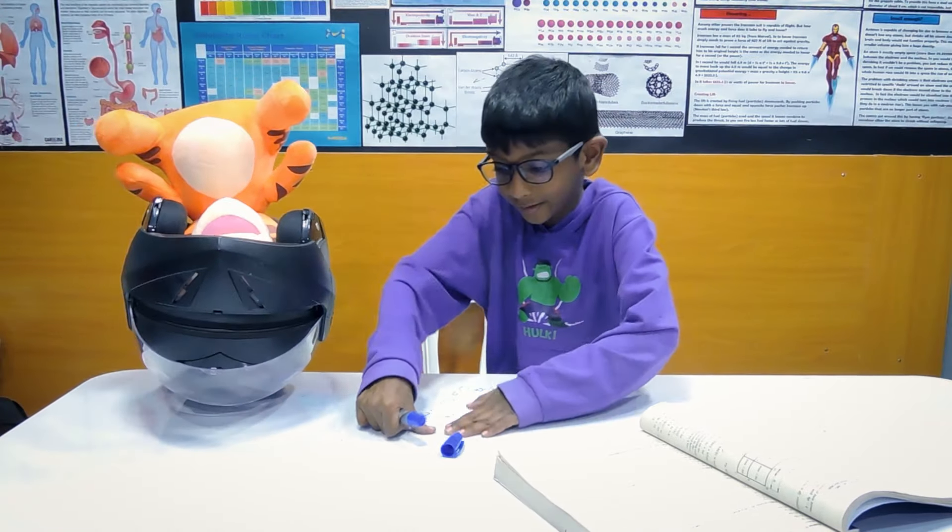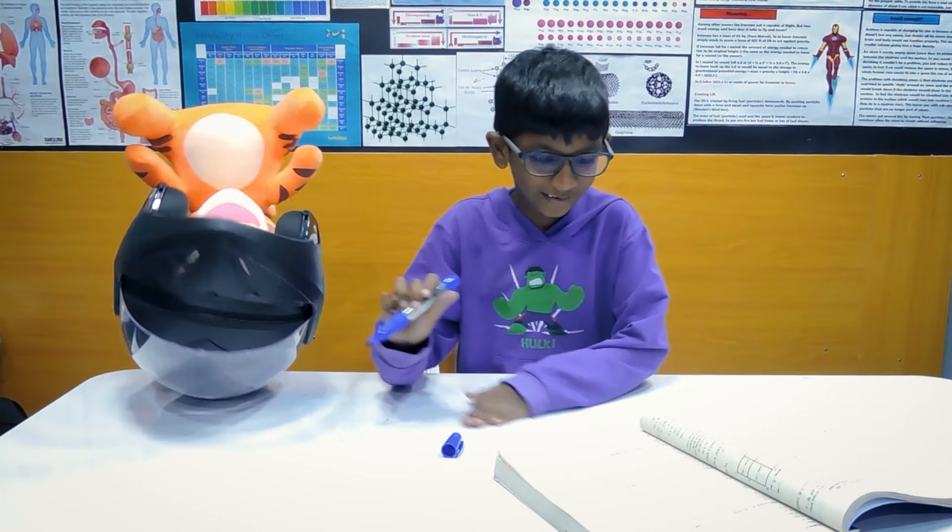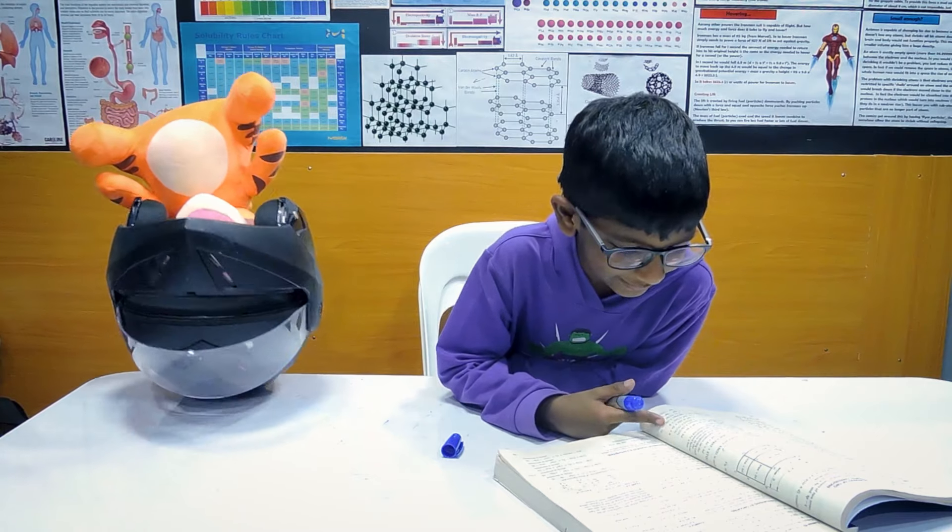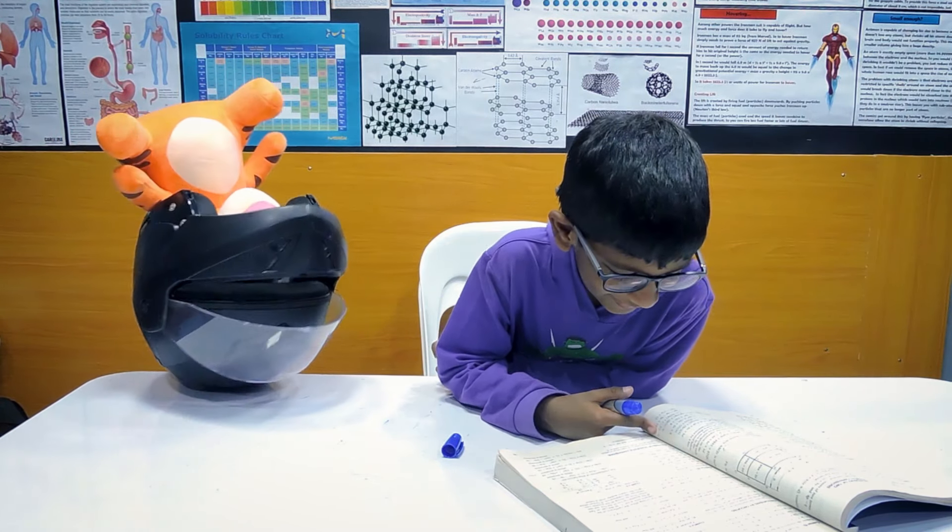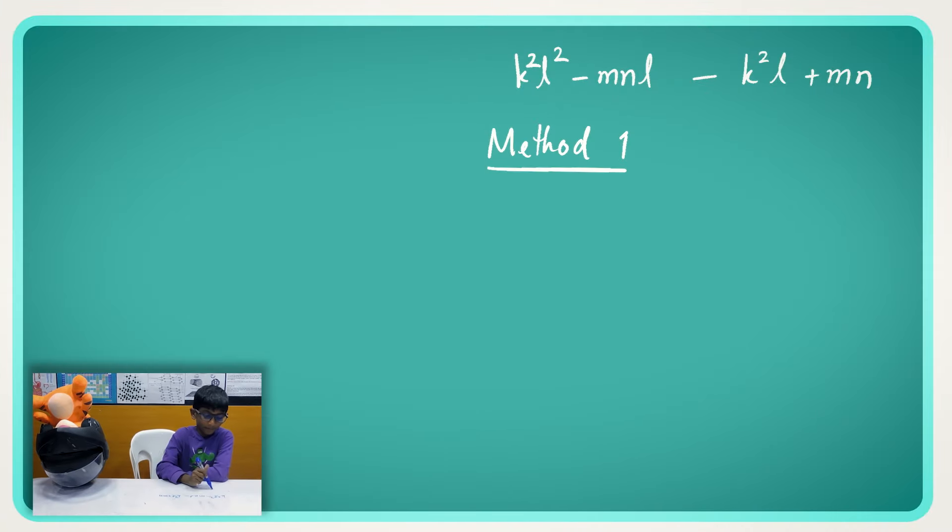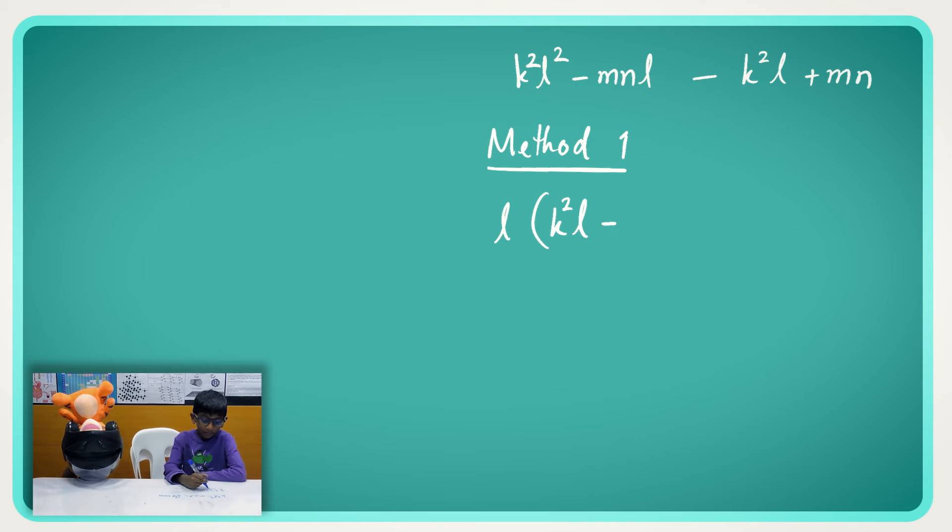The next one is going to be, I'm going to make it as hard as possible. Okay, so now we are going to take these two. Okay, and we get an L for outside. So inside we will get a K. K square L minus R and N, and then for the other two there is nothing coming, so we just...